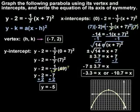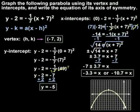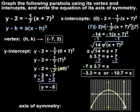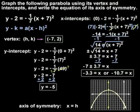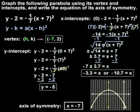Now we draw our parabola by connecting the vertex and the intercepts. Remember that a parabola is symmetrical, so we can approximate its shape based on our given points. Finally, the axis of symmetry is the line that splits the parabola down the middle. The equation of the axis of symmetry is always x equals h. So here, since h equals negative 7, the equation of the axis of symmetry is x equals negative 7.